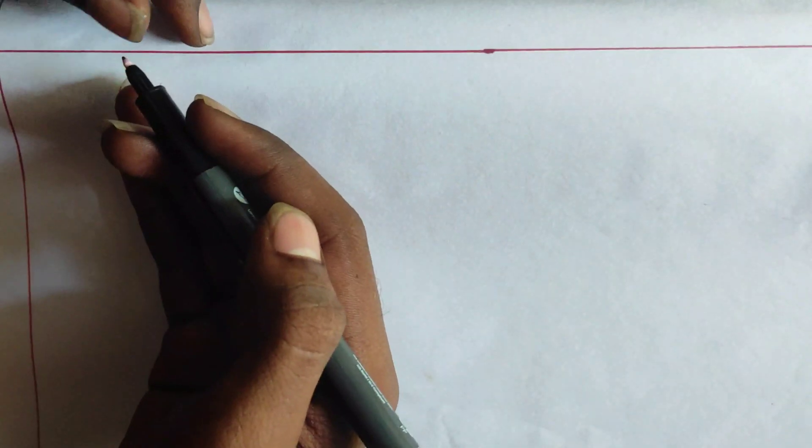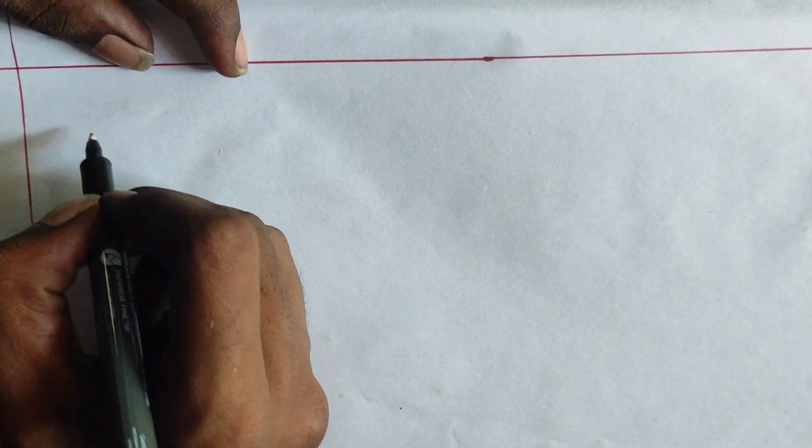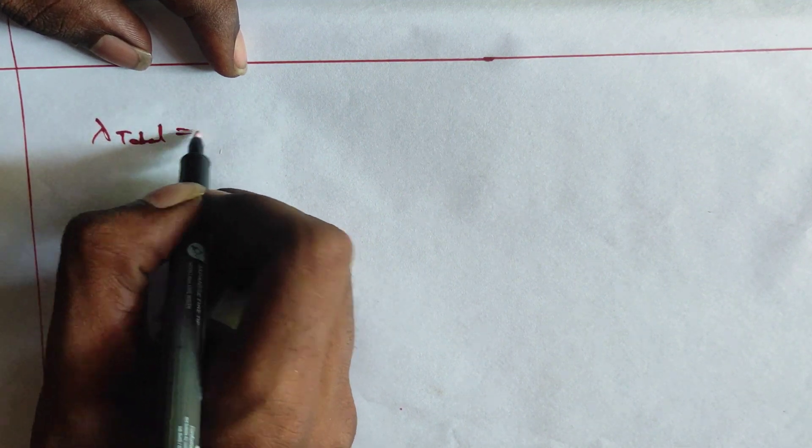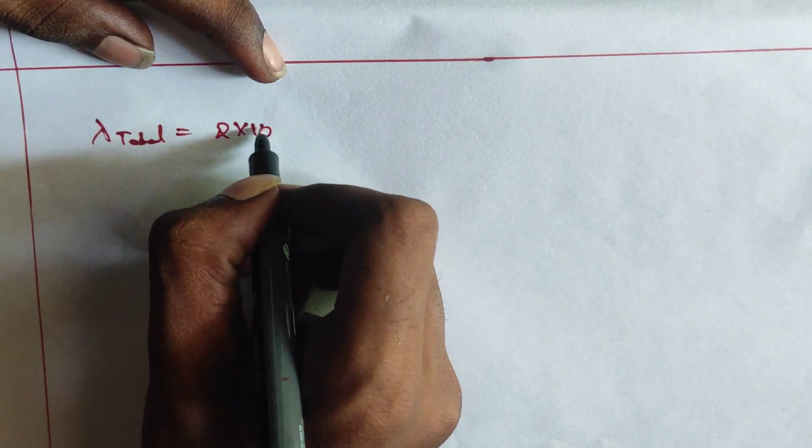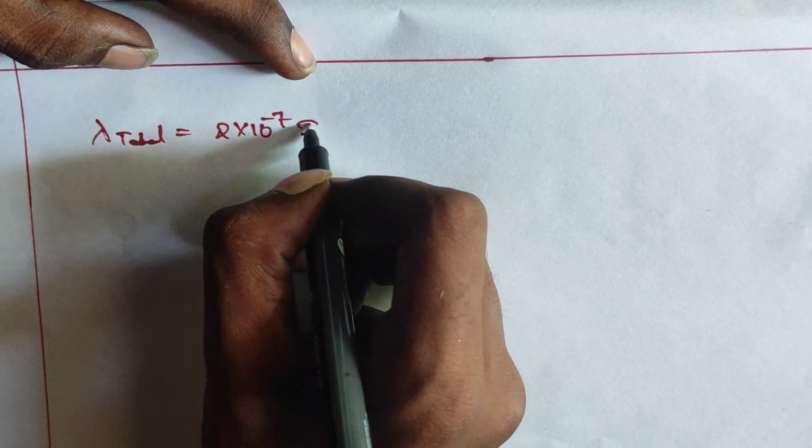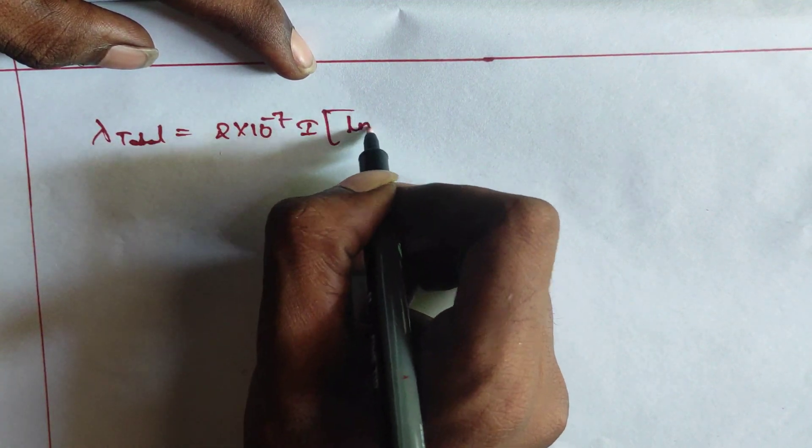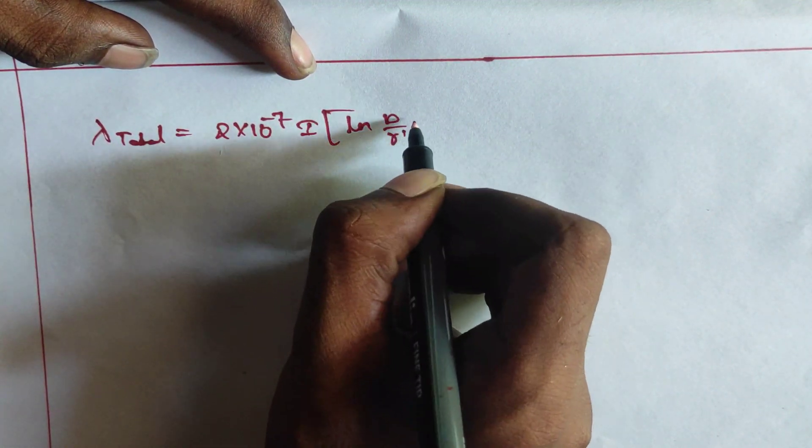See how simple it is. We already know that total flux linkage, lambda total, is equals to 2 into 10 power minus 7, I of log D by R dash,